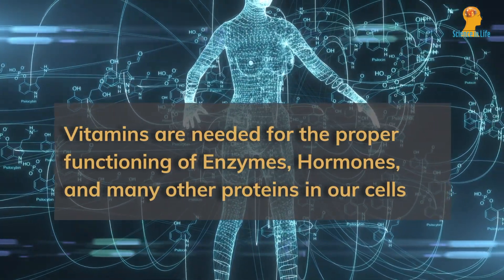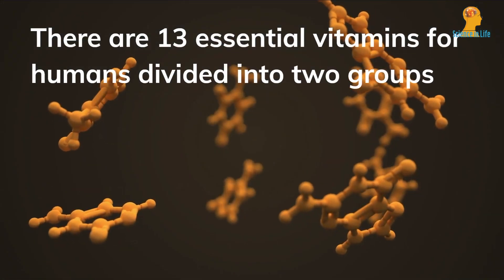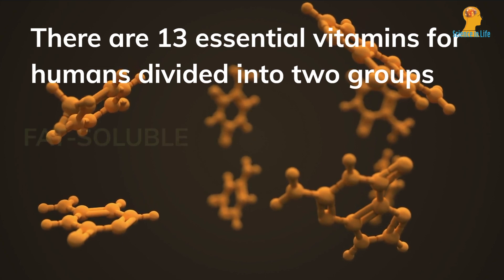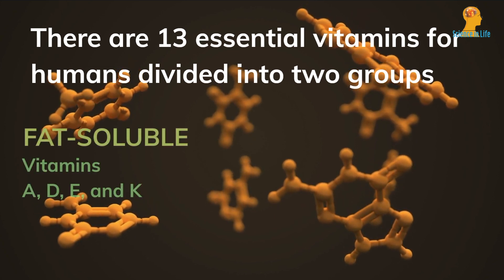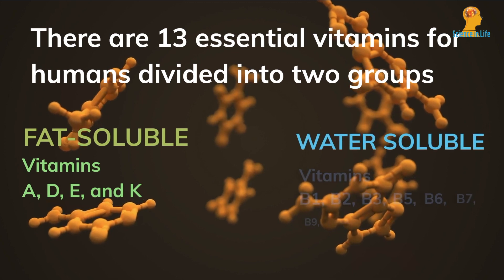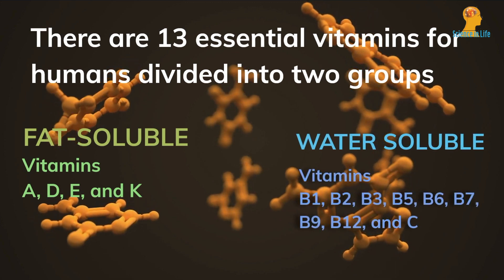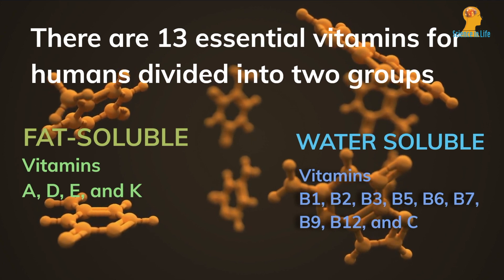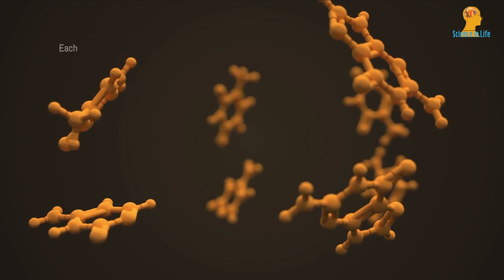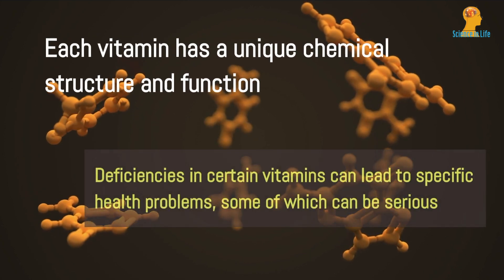Hormones and other proteins also depend on vitamins. There are 13 essential vitamins for humans, divided into two groups: fat-soluble vitamins — vitamins A, D, E, and K — and water-soluble vitamins — vitamins B1, B2, B3, B5, B6, B7, B9, B12, and vitamin C. Each vitamin has a unique structure and function, and deficiencies can lead to specific health problems.